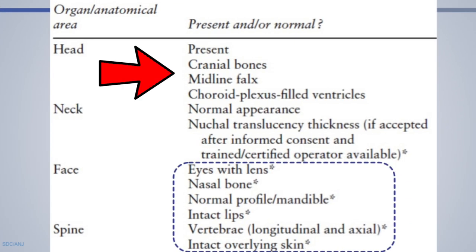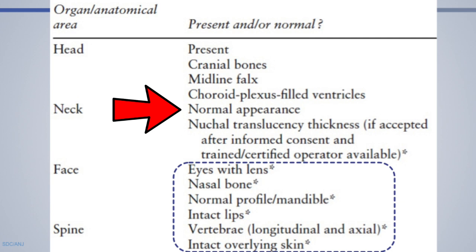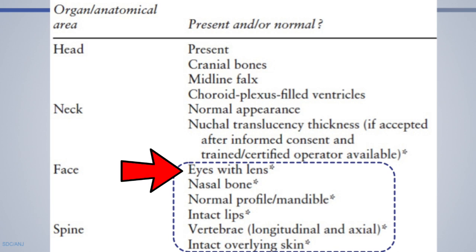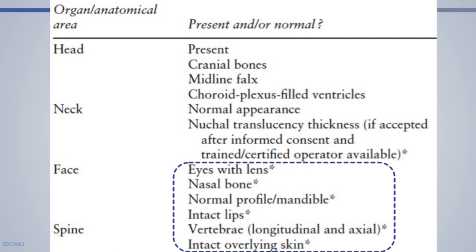What do the guidelines say for the head? We check whether it is present, cranial bone ossification, the midline falx, and choroid plexus-filled ventricles. In the neck, we assess normal appearance and nuchal translucency by a trained or certified operator. For the face, we look at eyes with lens, the nasal bone, normal profile, mandible, and intact lips. Items marked with an asterisk are optional, but nasal bone and normal face profile can be seen easily; lips are difficult to see.